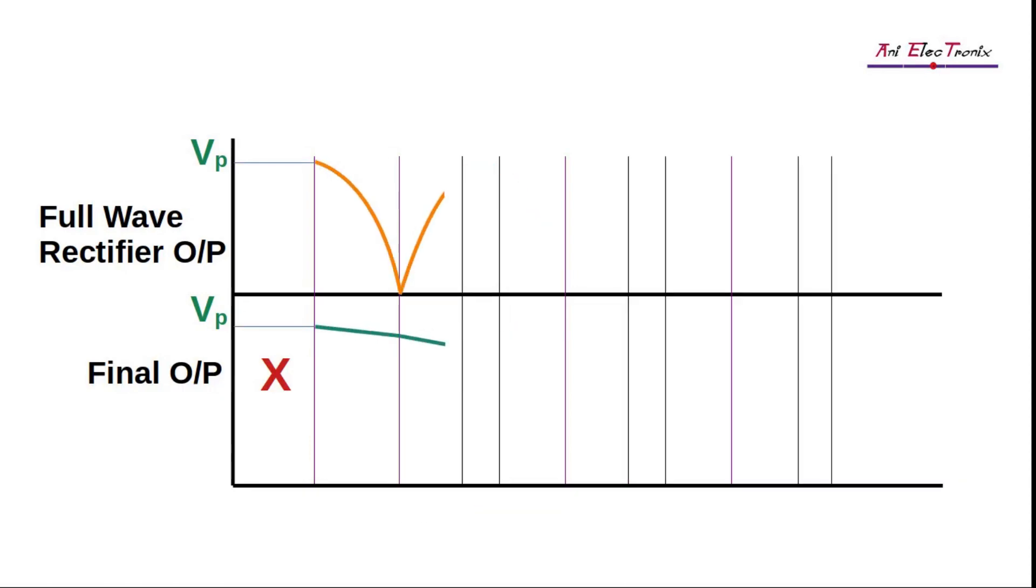As we can see, the filtered output is more stable than the rectified output. Although it still has an unwanted AC component and is called the ripple.